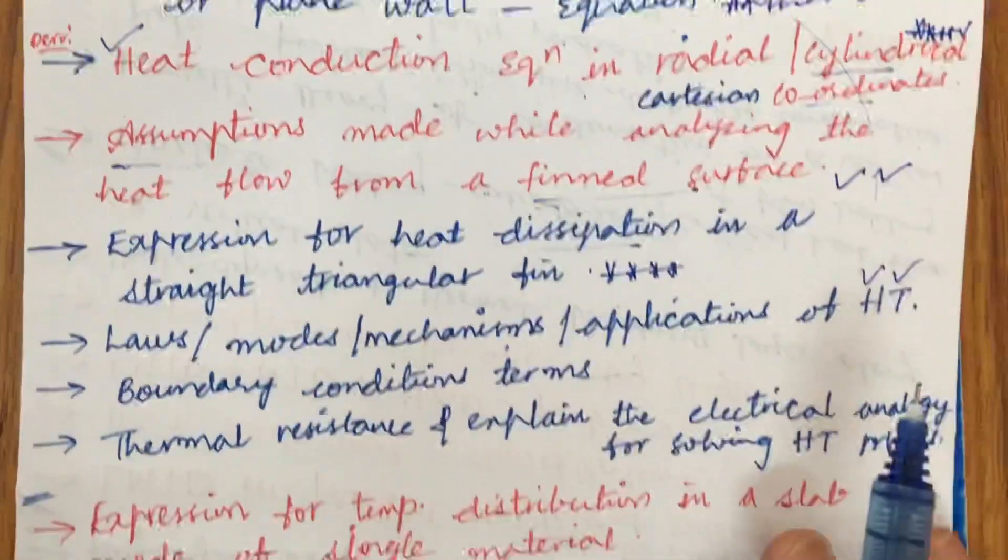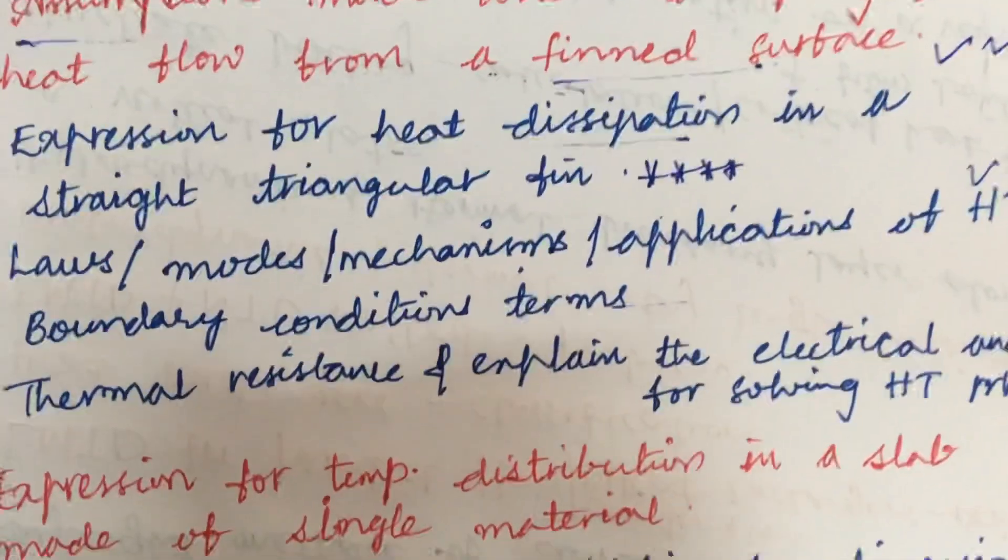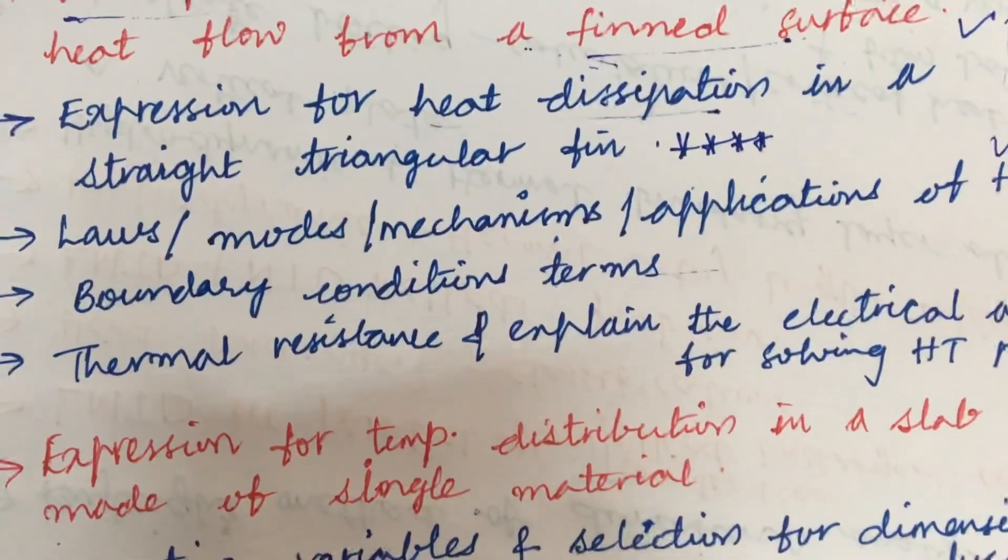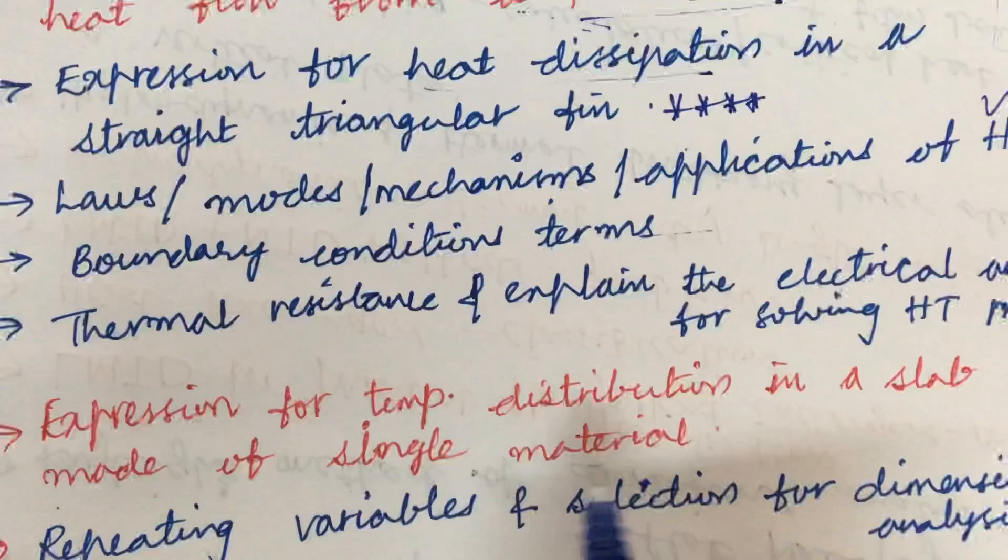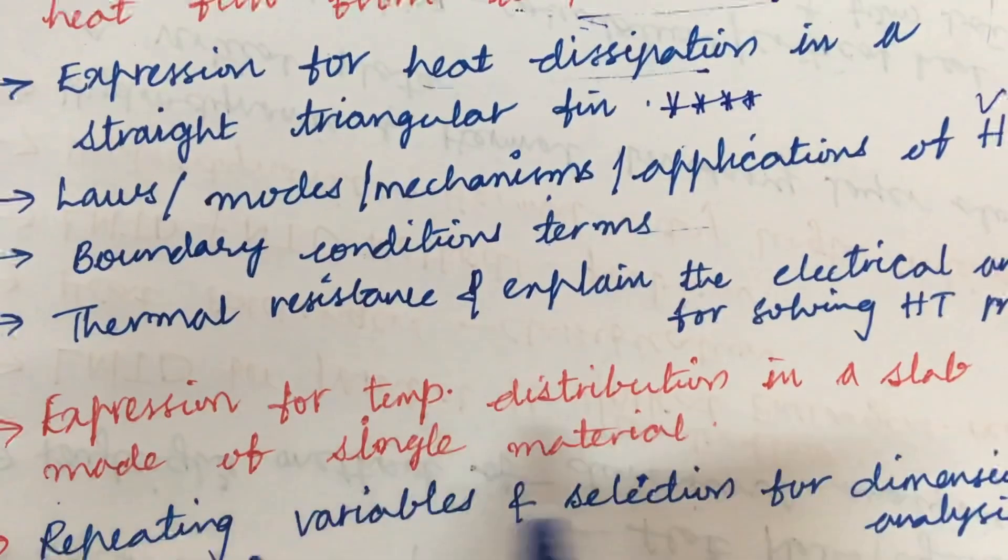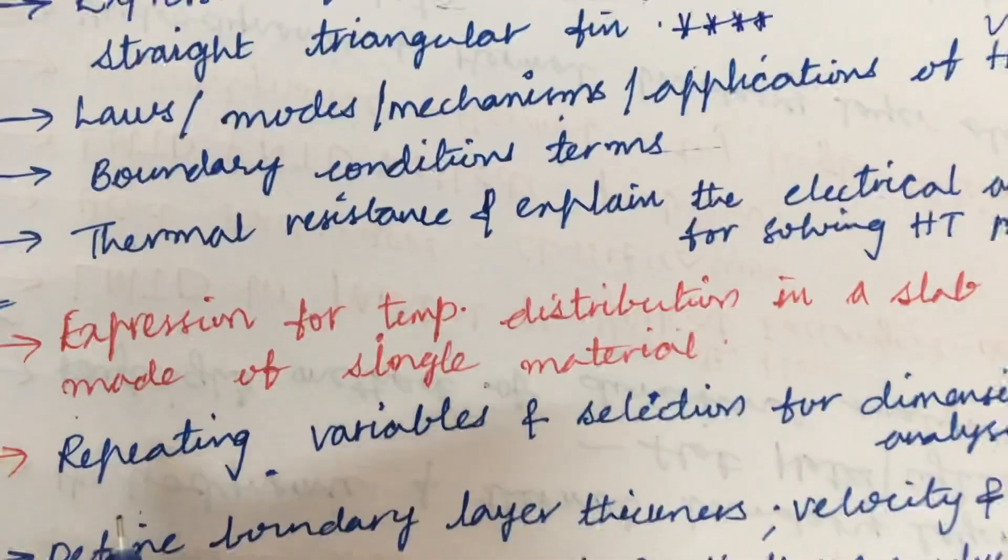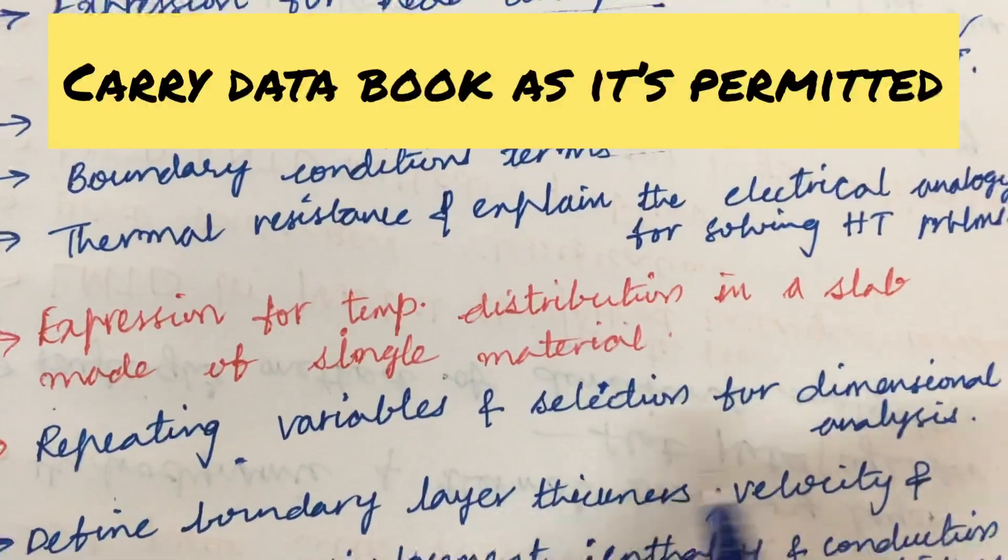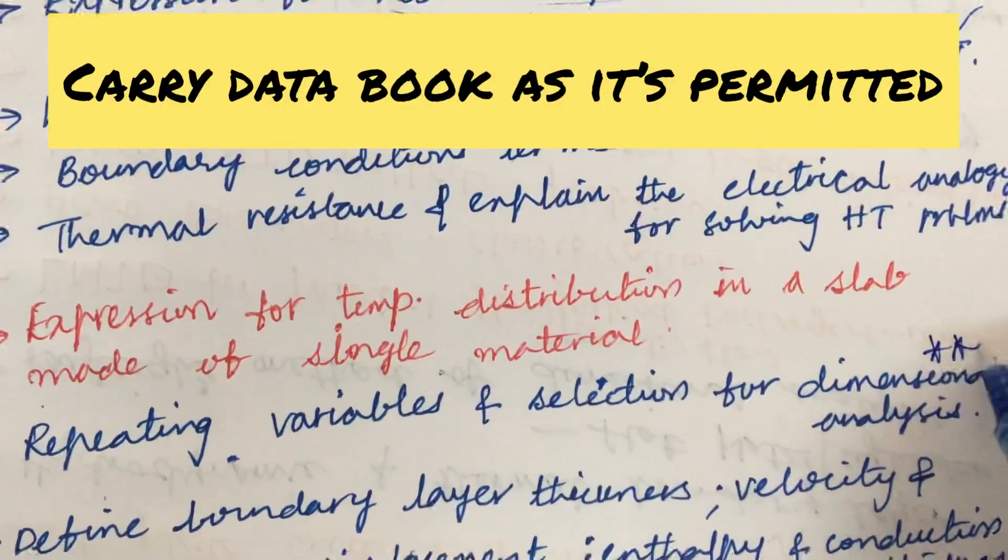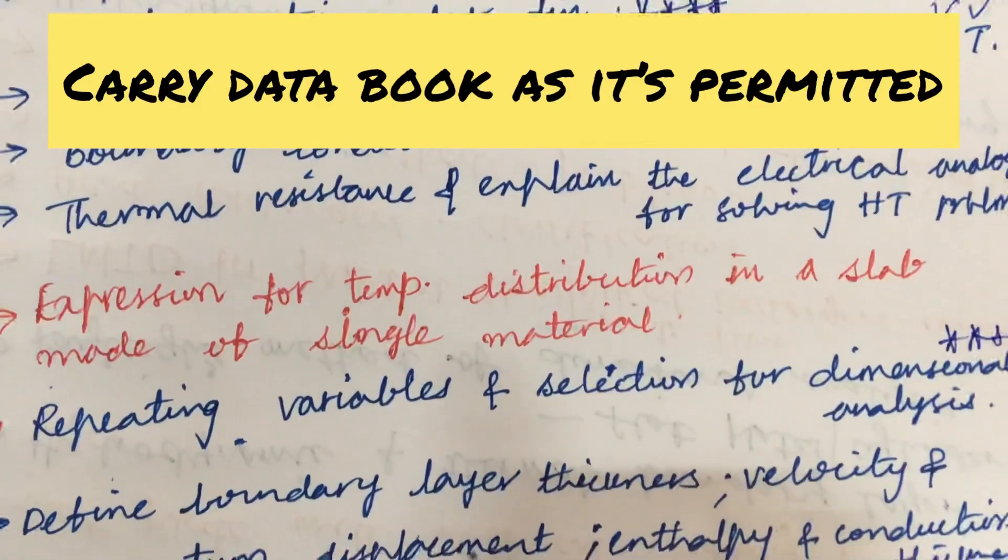Make sure to carry your calculator as well as data book duly signed by the college library. Later, the expression for temperature distribution in a slab made of a single material, as well as repeating variables. Explain the term and the selection for dimensional analysis is one of the gunshot questions, a theory question asked several number of times.